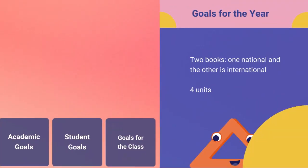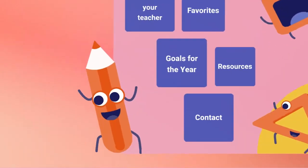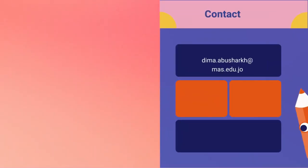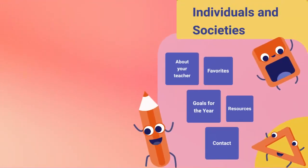This is part of the Modern American School vision and mission. If you want to contact me, you can contact me on my email as provided: dima.abusharikh@mas.edu.jo. You can also call the school if you want to reach me throughout the day.